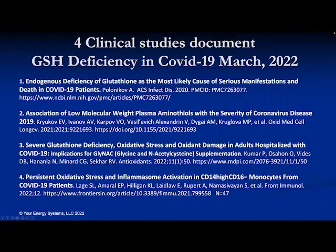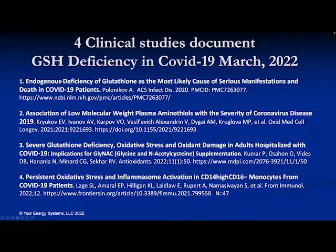It's now known that COVID-19 depletes glutathione. There are four studies on this. It started early in 2020 when a Russian named Polenikov observed that the most likely cause for serious manifestations and death in COVID-19 patients was due to an endogenous deficiency of glutathione — meaning the amount of glutathione formed inside the cells. Subsequent studies with larger numbers have corroborated this.